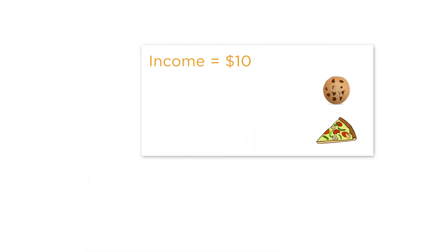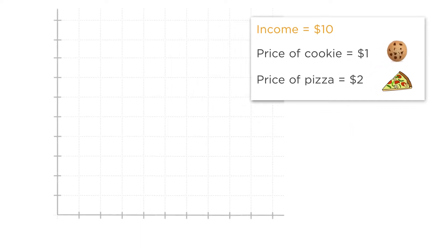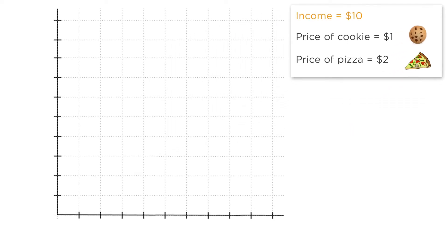Let's say you have $10, that cookies cost $1 each, and that slices of pizza are $2 each. Now let's return to our graph that showed the decision between pizza and cookies.